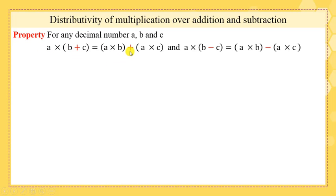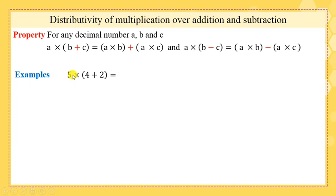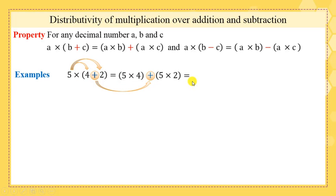Now, distributivity of multiplication over addition and subtraction: A × (B + C) = A × B + A × C, and A × (B − C) = A × B − A × C. Example: 5 × (4 + 2) = 5 × 4 + 5 × 2. 5 × 4 equals 20, 5 × 2 equals 10, 20 + 10 equals 30.